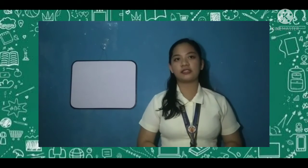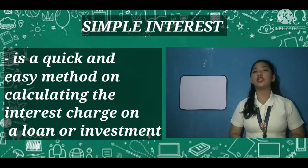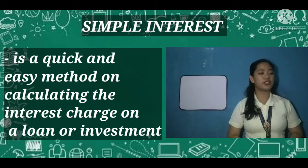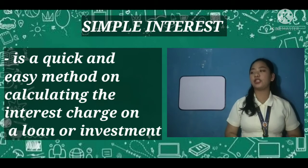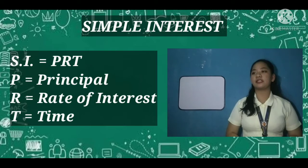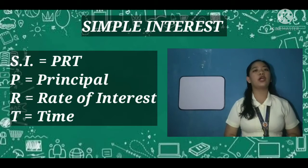Before we proceed on computing simple interest, let's talk about what simple interest is. Simple interest is a quick and easy method of calculating the interest charge on a loan or investment. We can calculate simple interest using the formula: Simple Interest equals P (principal) times R (rate) times T (time).